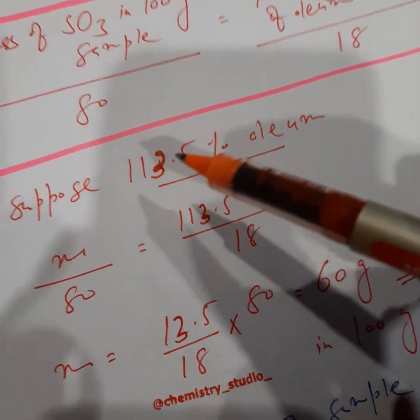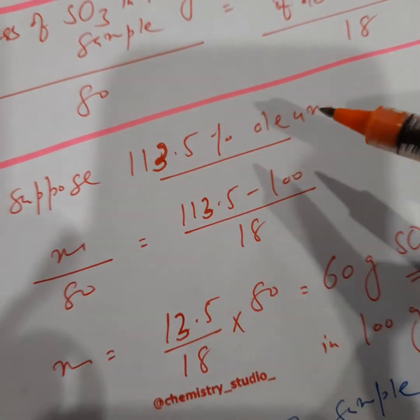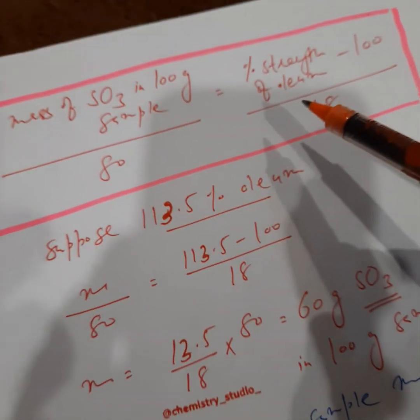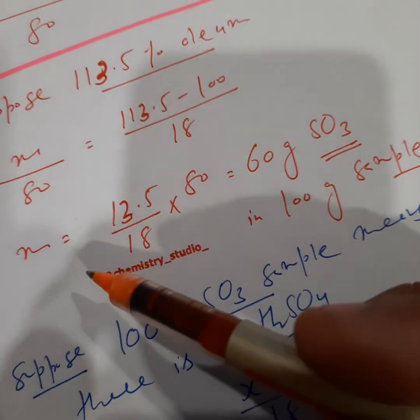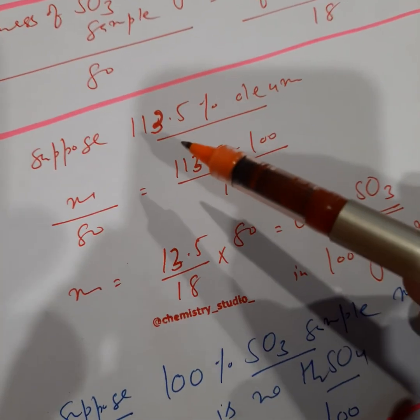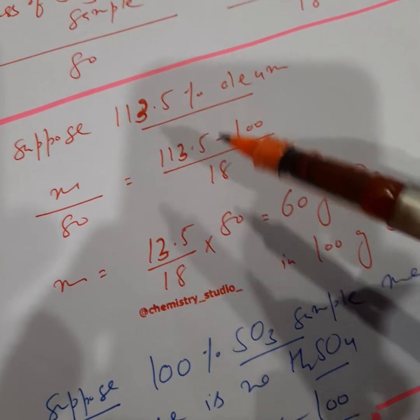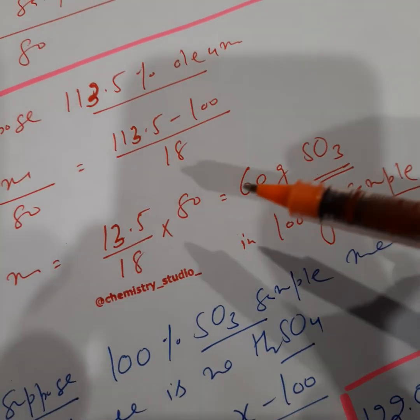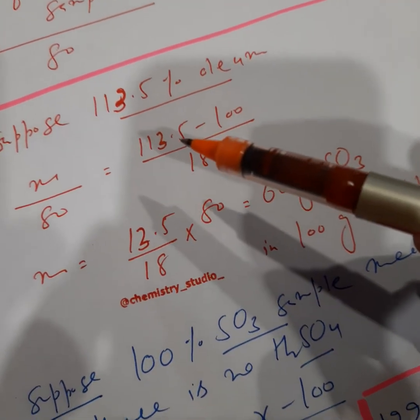Let us take another example. It is 113.5% oleum. I am putting this value in this equation and I am calculating mass equal to 60 grams of SO3. It means that when the percentage is 113.5%, the 100 gram sample contains 60 grams of SO3. This is something quick.